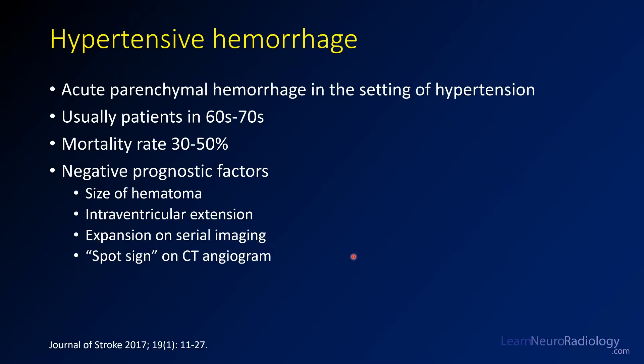This is a relatively straightforward case of hypertensive hemorrhage — hemorrhages which occur in the setting of hypertension. These patients are usually a little bit older, in their 60s and 70s. There is a very high mortality rate, and the size of the hematoma, expansion on CTA, expansion on serial imaging, or the spot sign — when you see active extravasation on CTA — are all associated with poor prognosis.